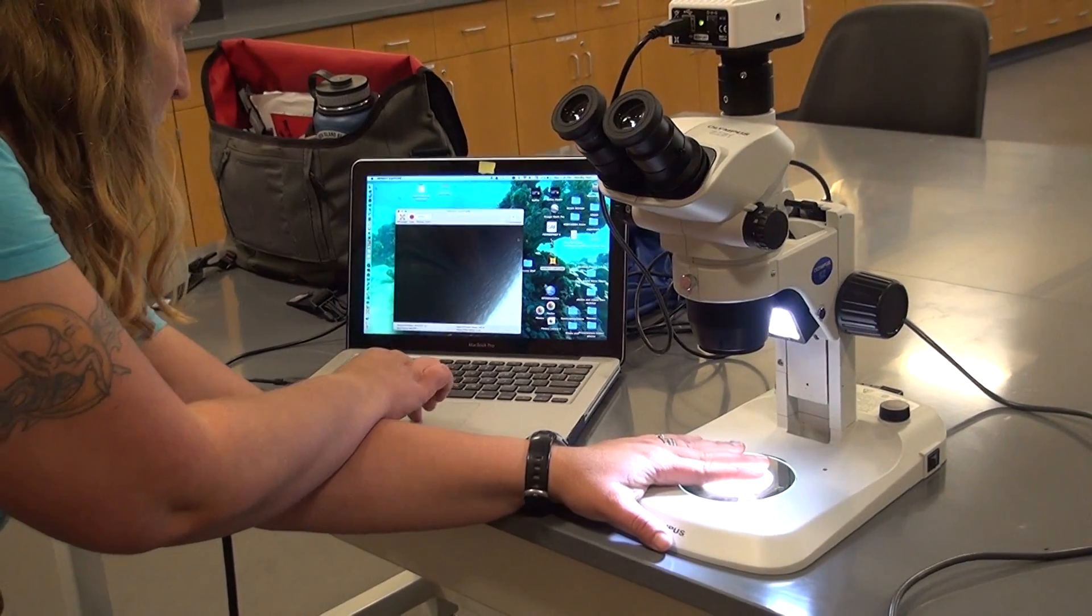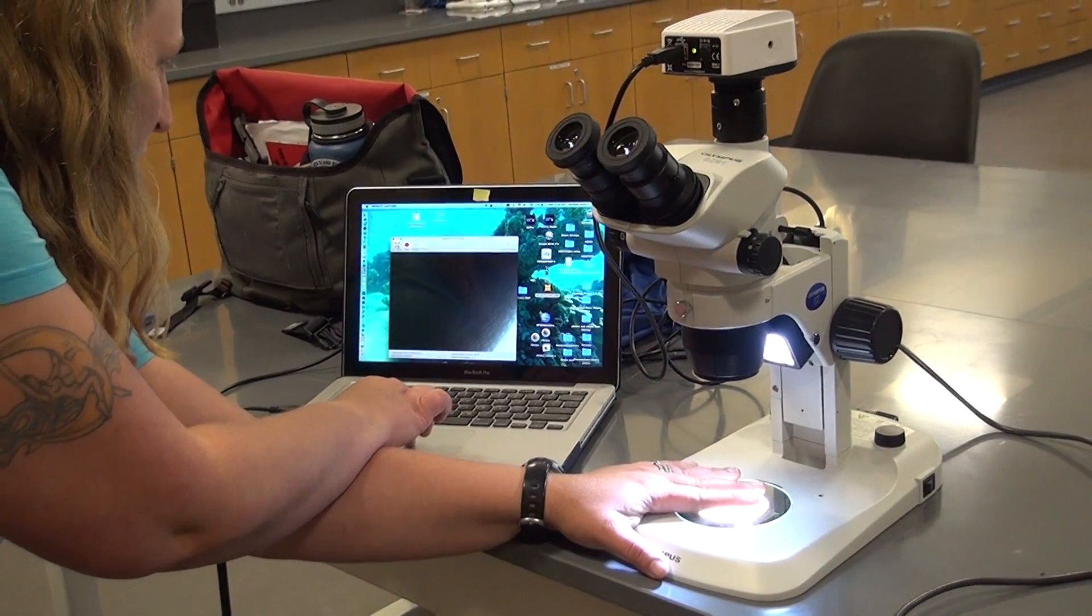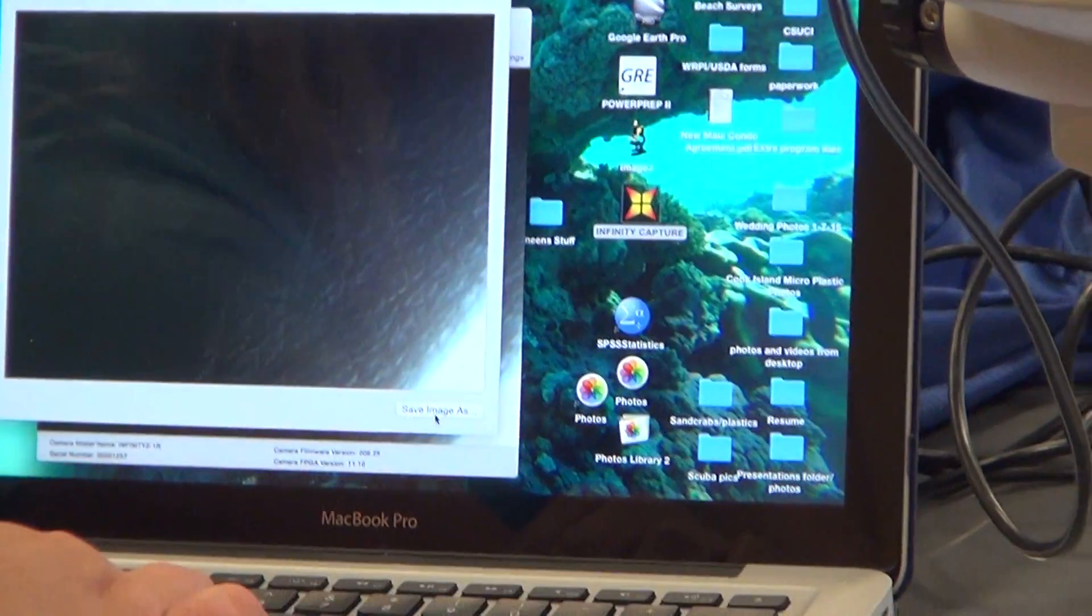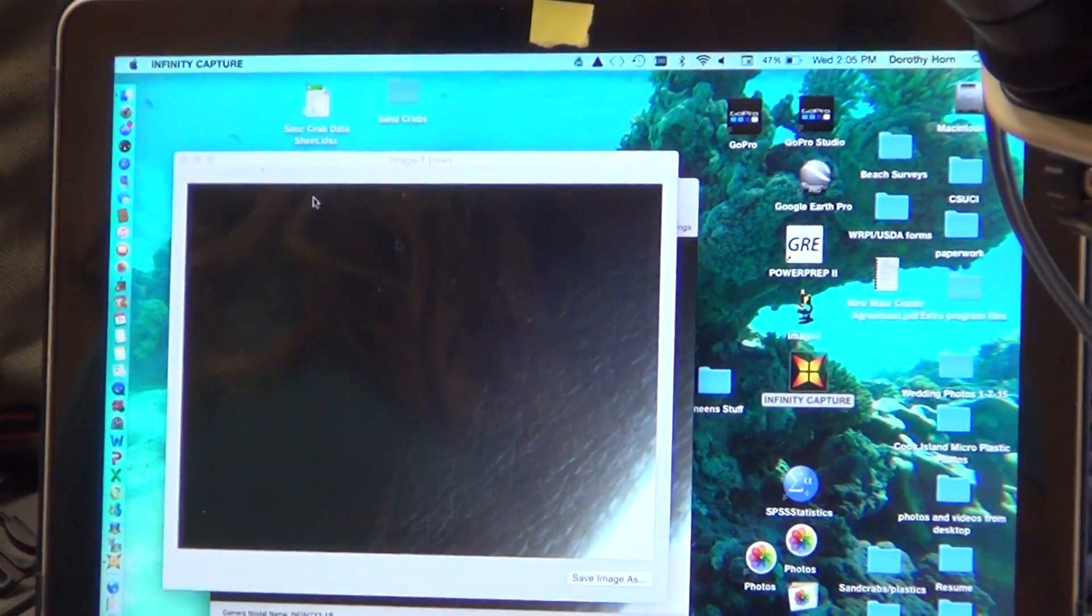And then when you want to take a picture, you take your arrow, and you click on Still Image. And it takes a picture, and then you can save your image as whatever you want. You can save it on your desktop, etc.